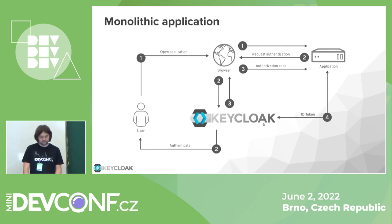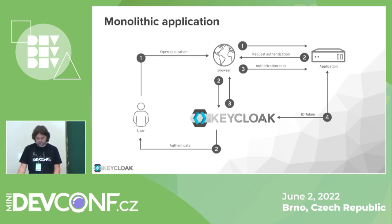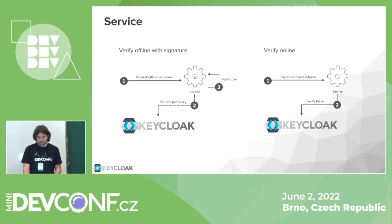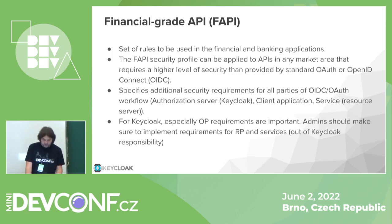Tokens contain data about users and can be used to send requests to other services. The token request is sent directly from the application to the Keycloak server, outside the browser. Once the client application has the tokens, it can use them to invoke REST services, which can verify that the token really comes from Keycloak either by verifying the signature or by sending a request to Keycloak to check if it is a trusted token.